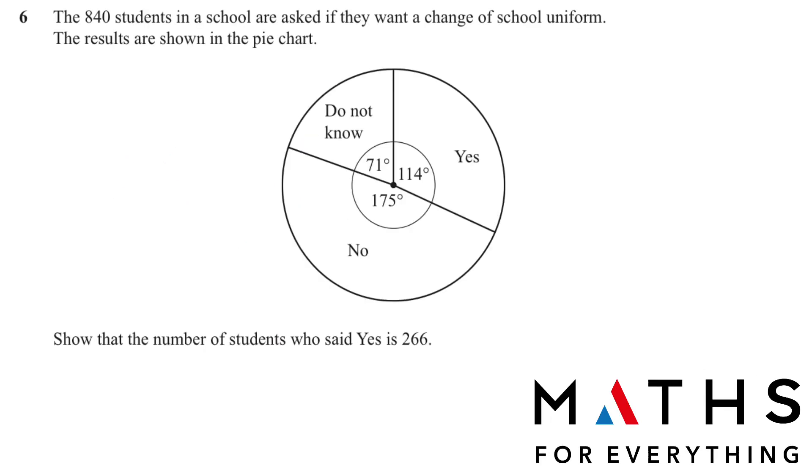Question number 6. We have been given a pie chart. 840 students in a school are asked if they want a change of school uniform. The results are shown in the pie chart. 71 degrees do not know, 114 degrees yes, 175 degrees is no. Show that the number of students who said yes is 266. You need to know a formula here. And you need to remember.